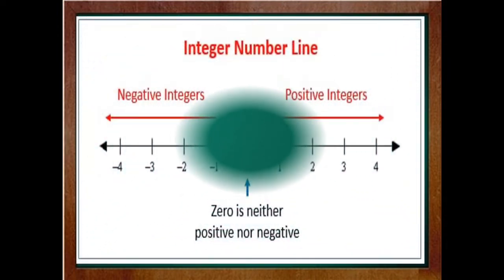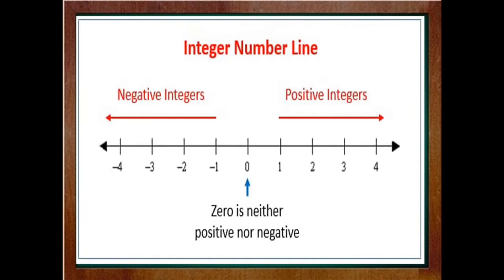Next is integers on the number line. When we represent integers on the number line, we consider 0 as the midpoint. All the positive integers lie towards the right and all the negative integers lie towards the left. We set off equal distances to the left and to the right of 0 to denote the negative and positive integers. For example, minus 4 and 4 are at equal distances from 0 but they are in opposite directions. Hopefully, it is also clear to you.